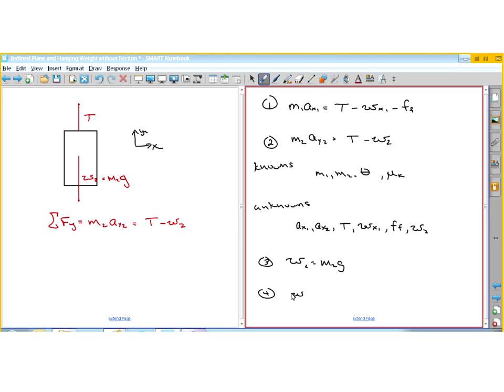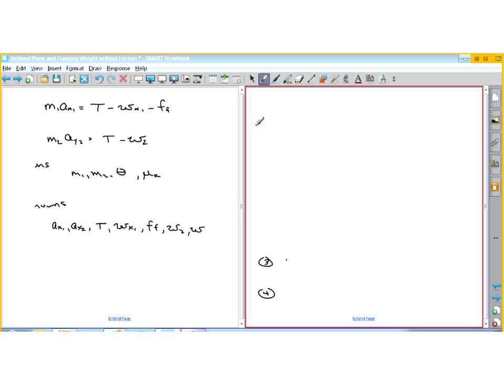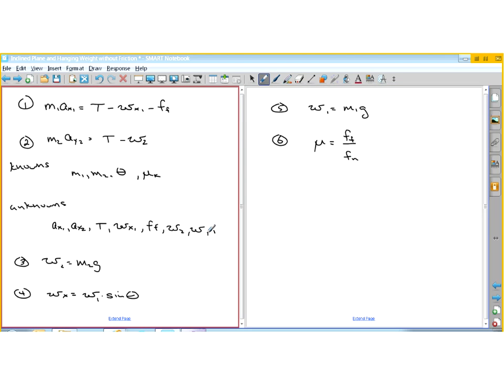W2 is equal to M2 times G. So there's one more equation. W sub X is equal to W times the sine of theta. That introduced another unknown, so I'll write that down. So now we need seven equations.